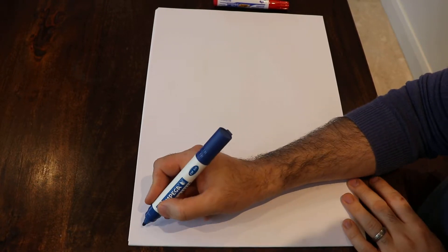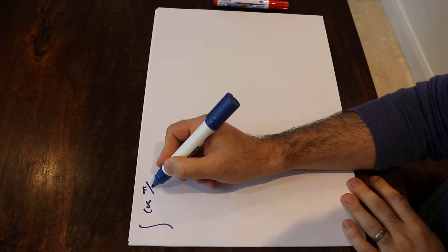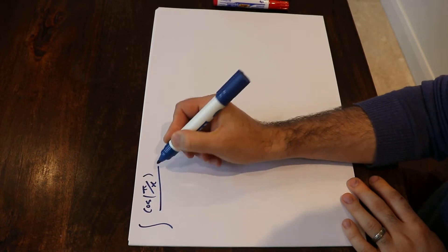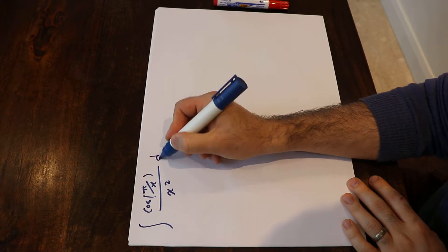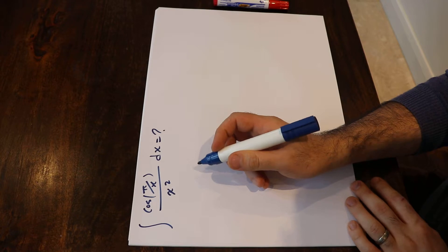Hello, I'm going to show you how to calculate the integral of cosine pi divided by x divided by x² dx. To solve this integral you need to use the substitution rule.